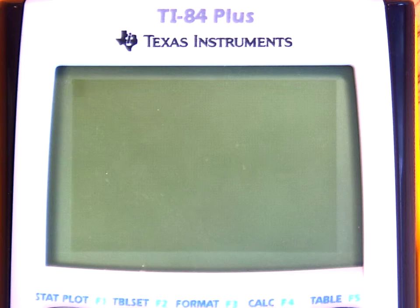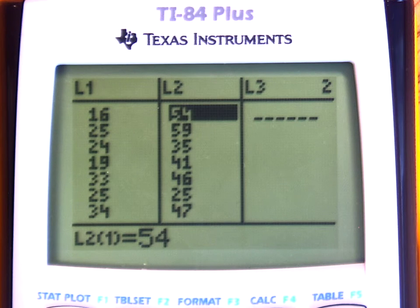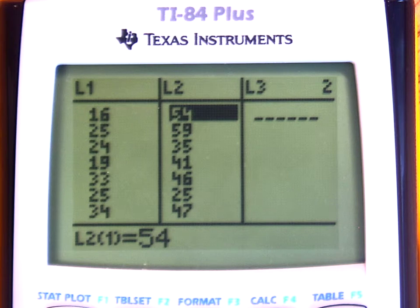So what I've done, I've entered Barry Bonds' home run totals into list one and Babe Ruth's home run totals into list two, the 16 for Bonds, the 15 for Ruth.